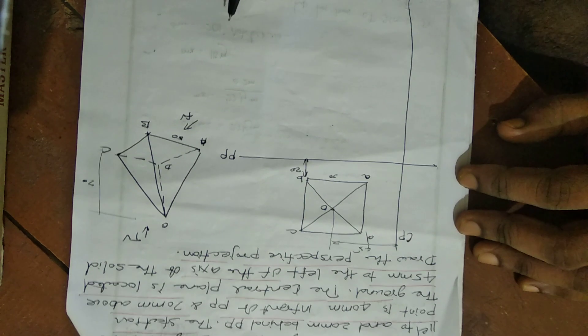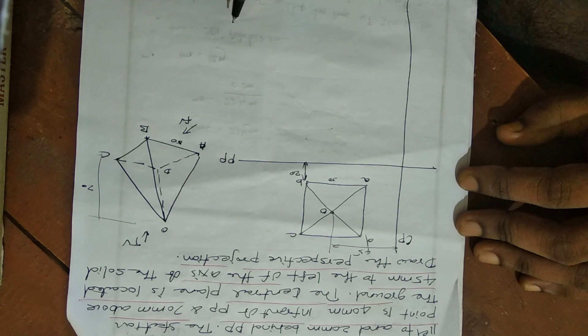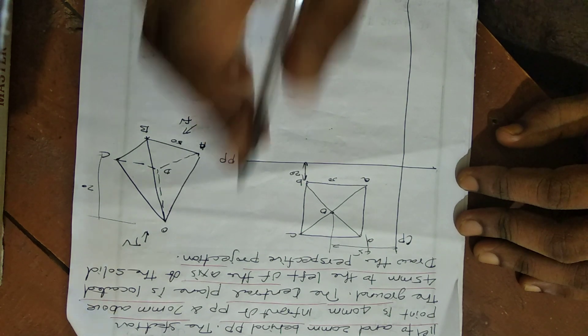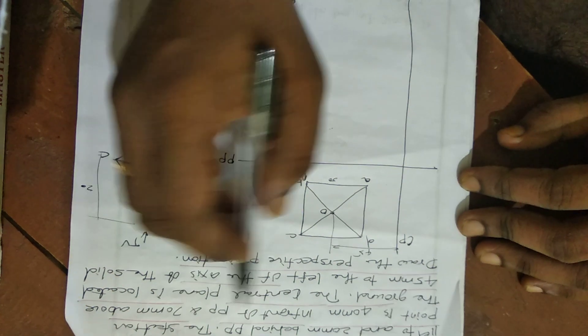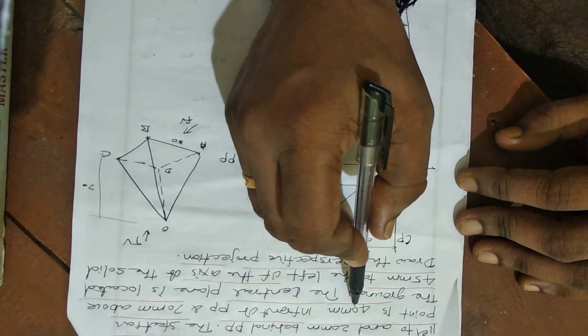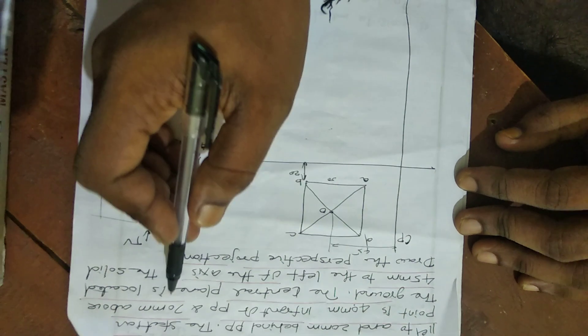Fourth procedure: draw the ground plane. The ground plane is marked as S and S-dash, with dimensions of 40 mm and 70 mm.